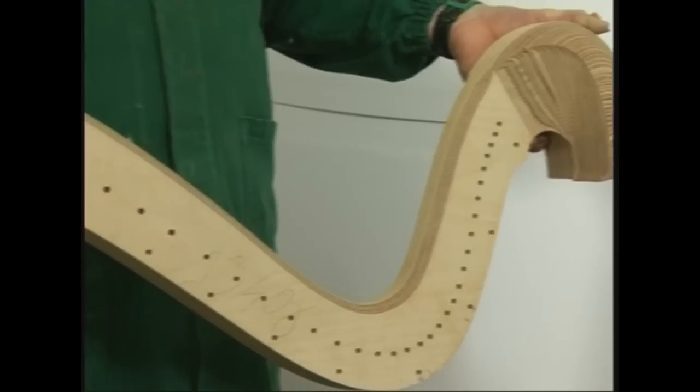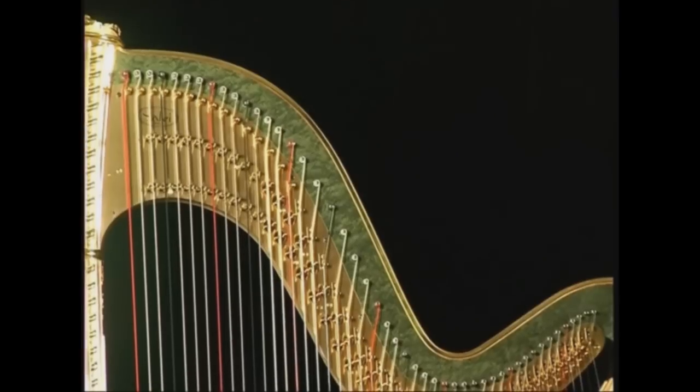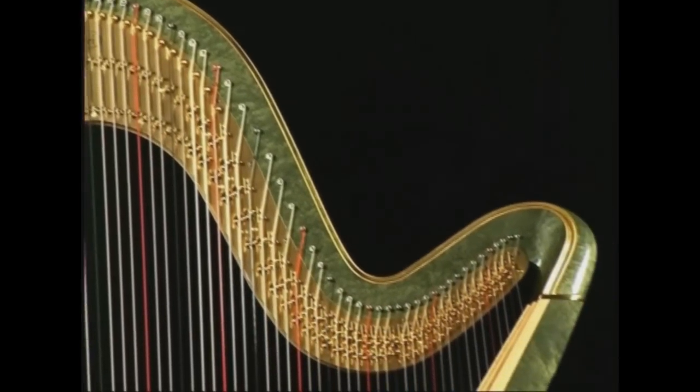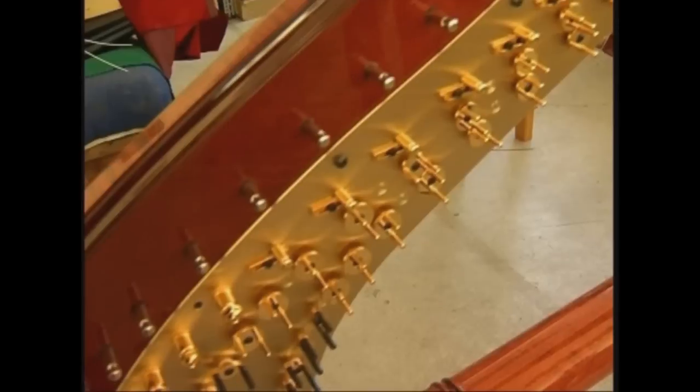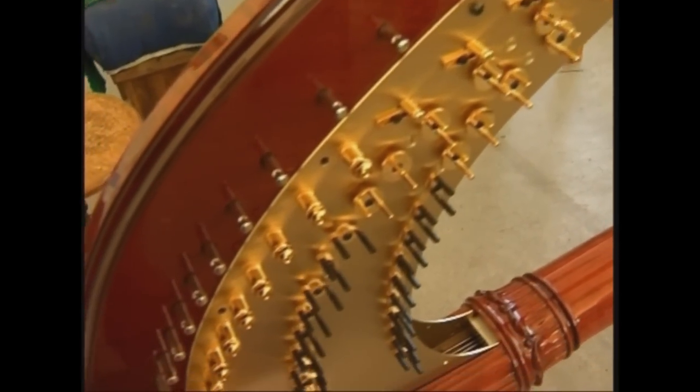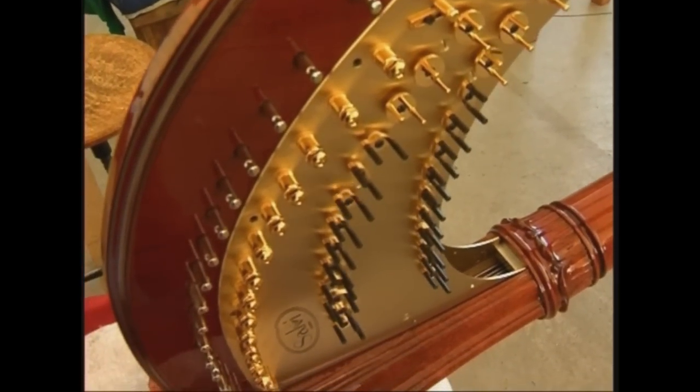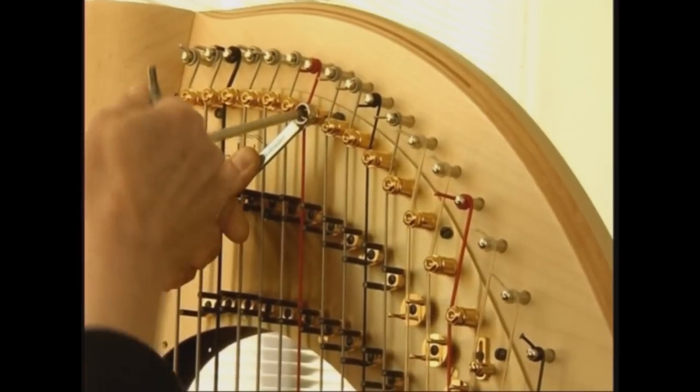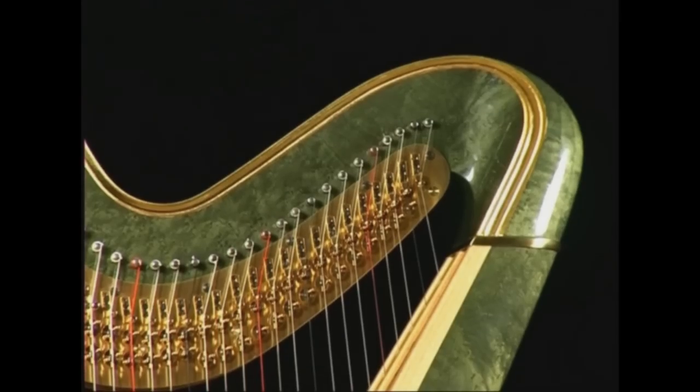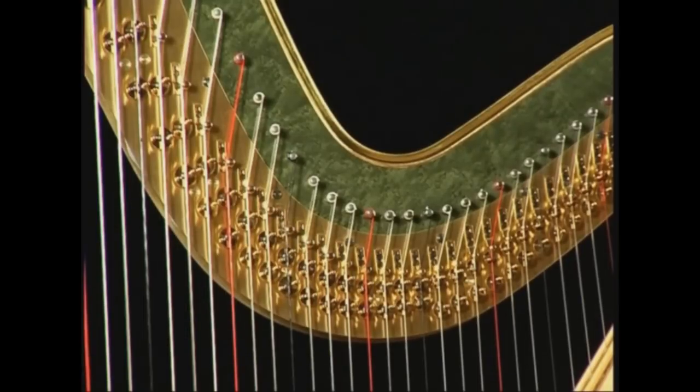The neck, also known as the string arm, with its distinctive S-shape determined by the diverse lengths of the strings, houses the mechanism necessary to produce the musical alterations, or rather the sharps and the flats, and permits the harpist to play in all tones.